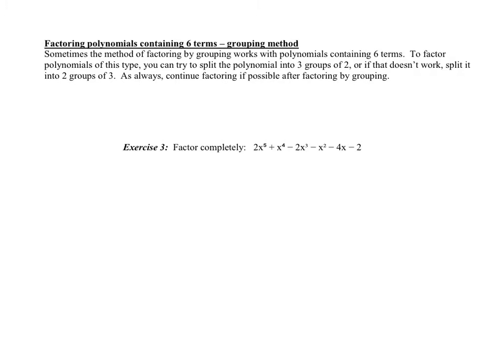Our next type of advanced factoring is factoring polynomials containing 6 terms using the grouping method. Sometimes the method of factoring by grouping works with polynomials containing 6 terms. To factor this type, you can try to split it several different ways. You can try it into 3 groups of 2, or if that doesn't work, into 2 groups of 3. It's just a trial and error thing. You just have to see what works.